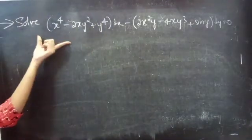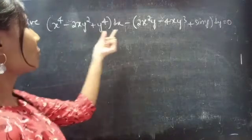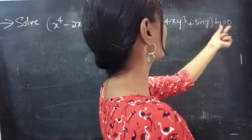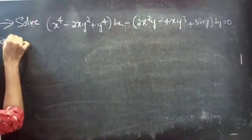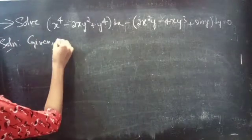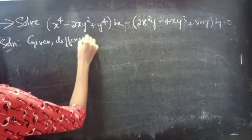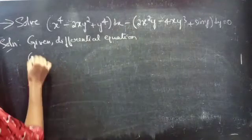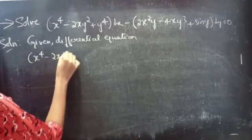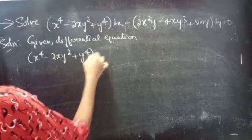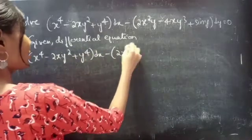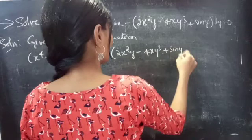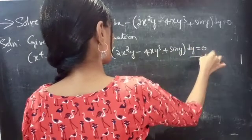Problem: Solve (x⁴ − 2xy² + y⁴) dx − (2x²y − 4xy³ + sin y) dy = 0. Consider it as equation 1.